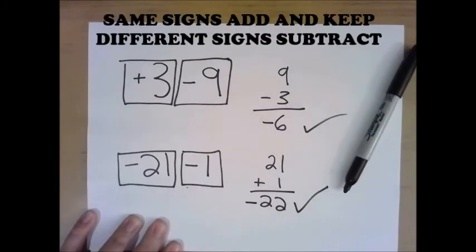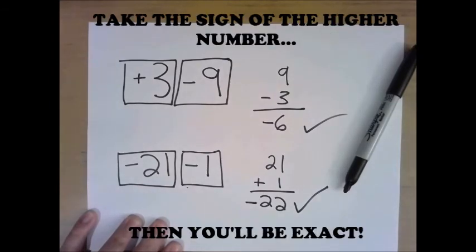Same signs add and keep, different signs subtract. Take the sign of the higher number, then you'll be exact. You'll be exact.